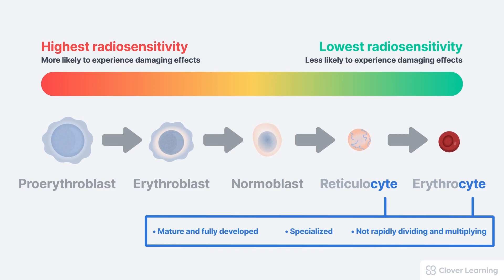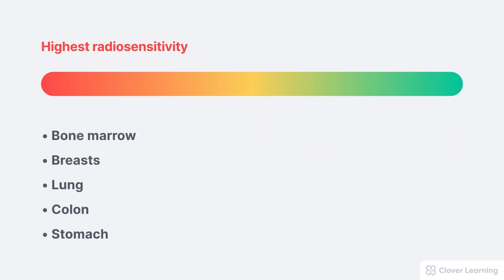The specific radiosensitivity of certain tissue types in the human body are well understood. Some tissues with the highest radiosensitivity are the bone marrow, breast, lungs, colon, and stomach. These tissues are most likely to experience the damaging effects of radiation like cell death or cell mutation, and it doesn't take as much radiation dose for these tissues to be harmed. They have the highest concentration of immature, unspecialized, rapidly dividing cells.